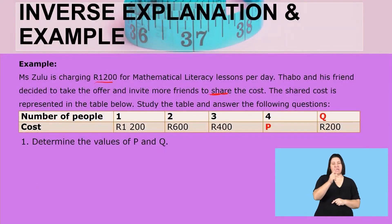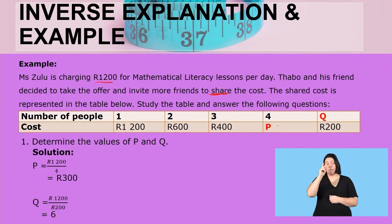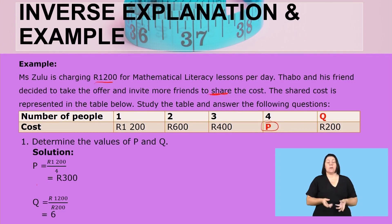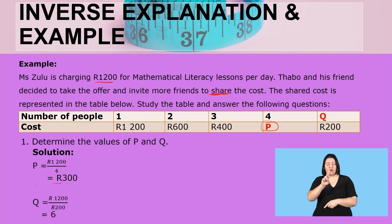Determine the values of P and Q. For P, that is the cost for four people. So to determine the cost for four people, we take 1,200 rent and divide it by four, and we get 300 rent.